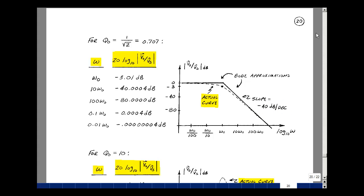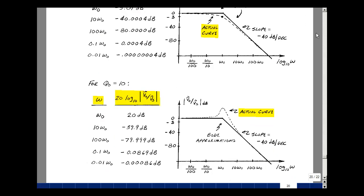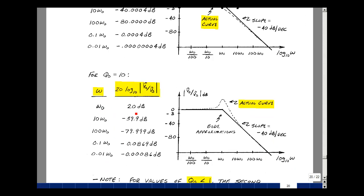If you do this for Q naught equal to 10, you get the following results. When omega equals omega naught, we get 20 dB. 10 omega naught minus roughly 40 dB. 100 omega naught, roughly minus 80 dB. 0.1 omega naught, again, very close to zero dB. And one one-hundredth, again, very close to zero dB.